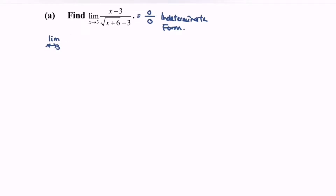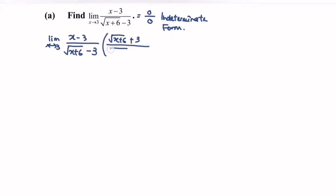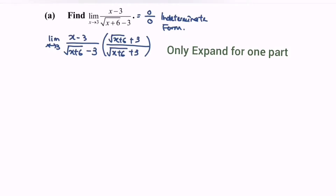For this question, my suggestion would be to multiply by the conjugate. So we write the limit as x approaches 3 for the function (x minus 3) over (square root of x plus 6, minus 3), and the conjugate will be (square root of x plus 6, plus 3) over (square root of x plus 6, plus 3). To expand the situation, kindly take note to only expand one part, which is the denominator.